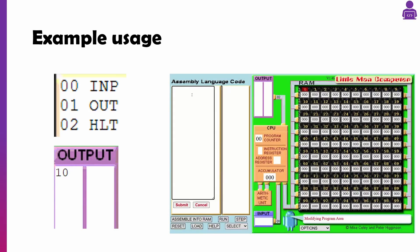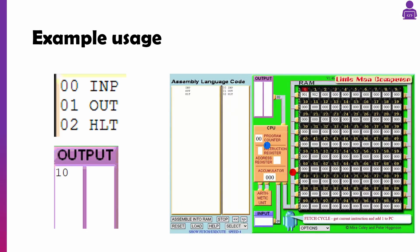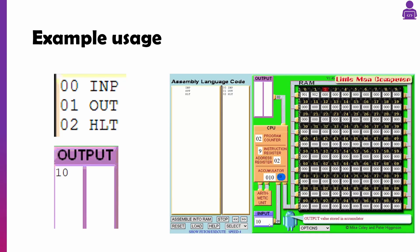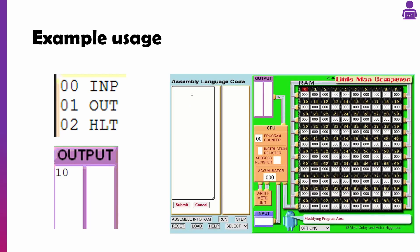I've got an example program on screen now where I input the number 10, output it, and stop the program using HLT. You can see these two little circles running around — these represent our buses. The blue one is the data bus and the red one is acting as the address bus. It's not 100% accurate, but you can get a good idea of the address bus going to the instruction in RAM and the data bus taking it back to the control unit. As you can see, I inputted 10 and the result was 10.